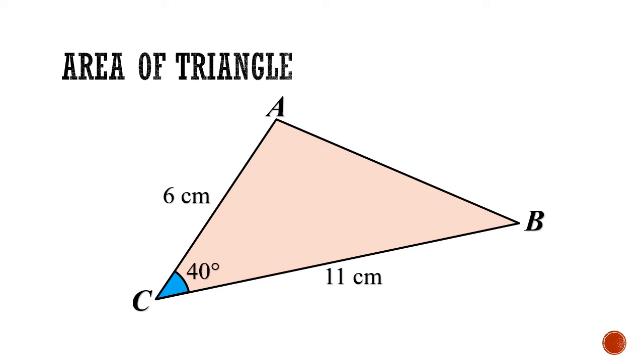So to find this area, let's go back to our trusty formula, half base times height. If we use 11 cm for the base, the vertical height would be this red line shown. Unfortunately, the value of this height H is not given in the question.